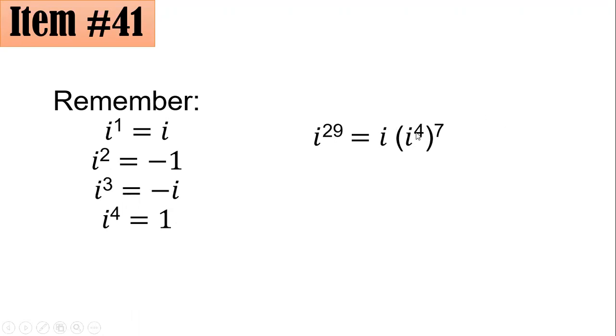That's why i raised this 1 to 7, and i to the 4 to the 7 is i to the 28. But to reach i to the 29, I have to multiply by i.